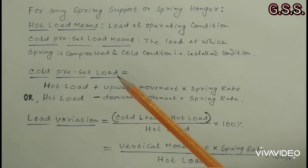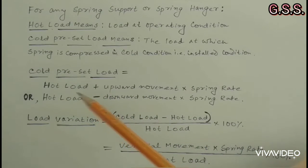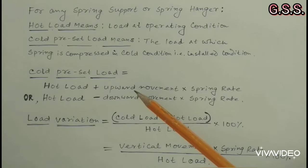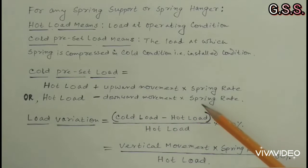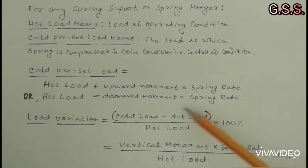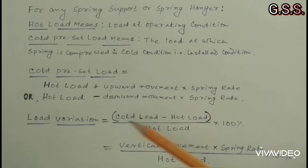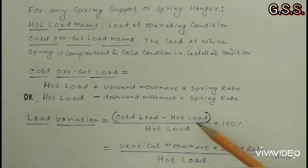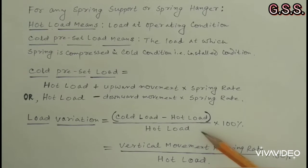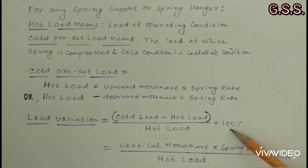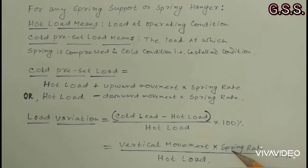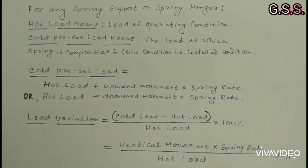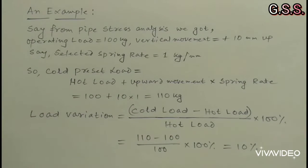Cold preset load equals hot load plus upward movement multiplied by spring rate, or hot load minus downward movement multiplied by spring rate. Load variation equals cold load minus hot load, divided by hot load, multiplied by 100% — that means vertical movement multiplied by spring rate divided by hot load into 100%. Now an example.